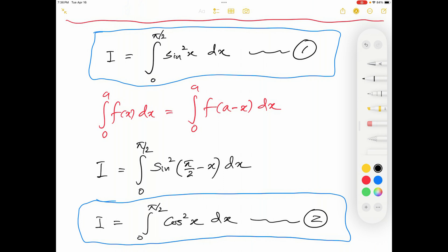If I add those two integrals on the left hand side I will have 2i. On the right hand side I will have integral from 0 to pi over 2 sine squared x plus cosine squared x dx.